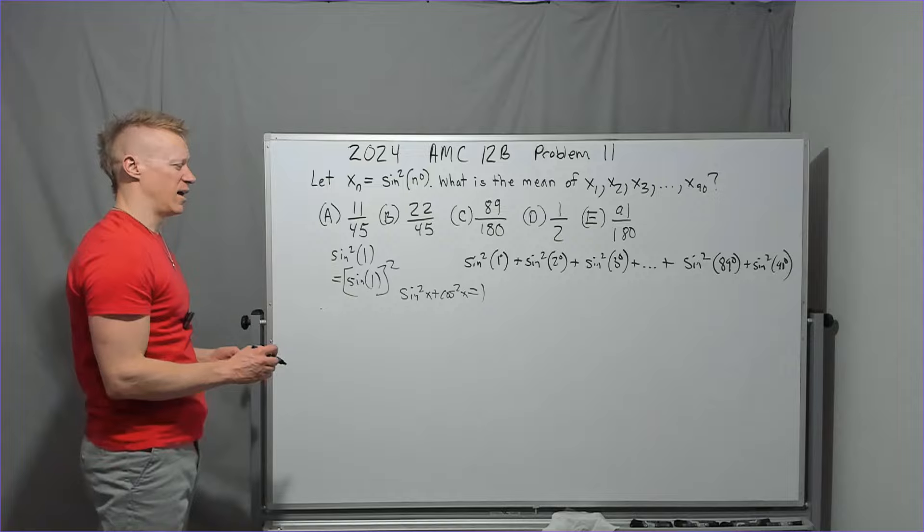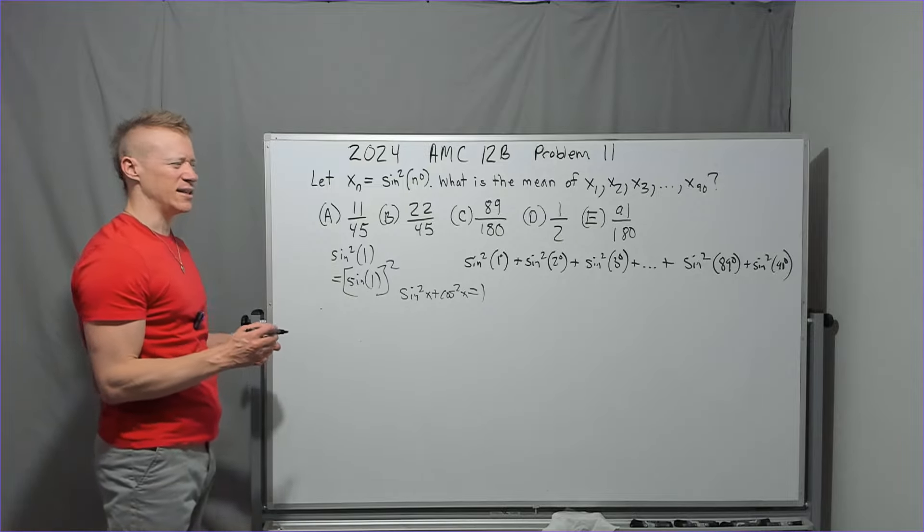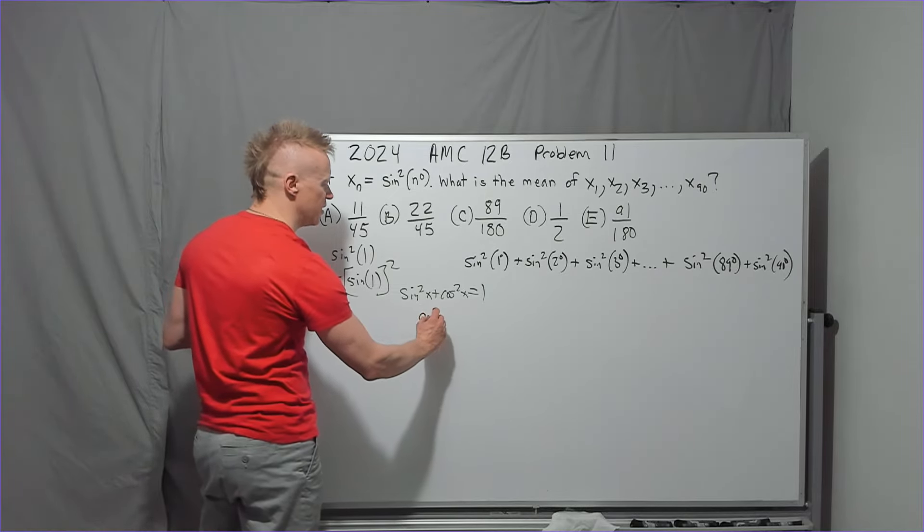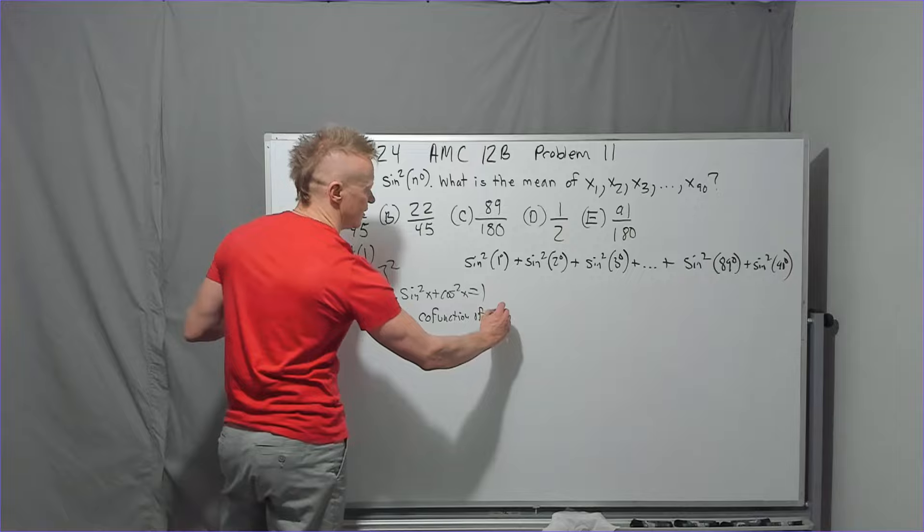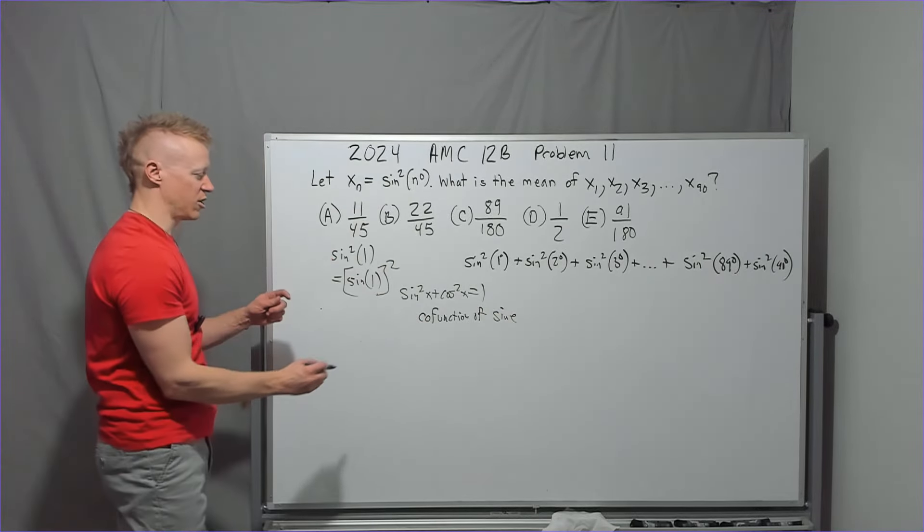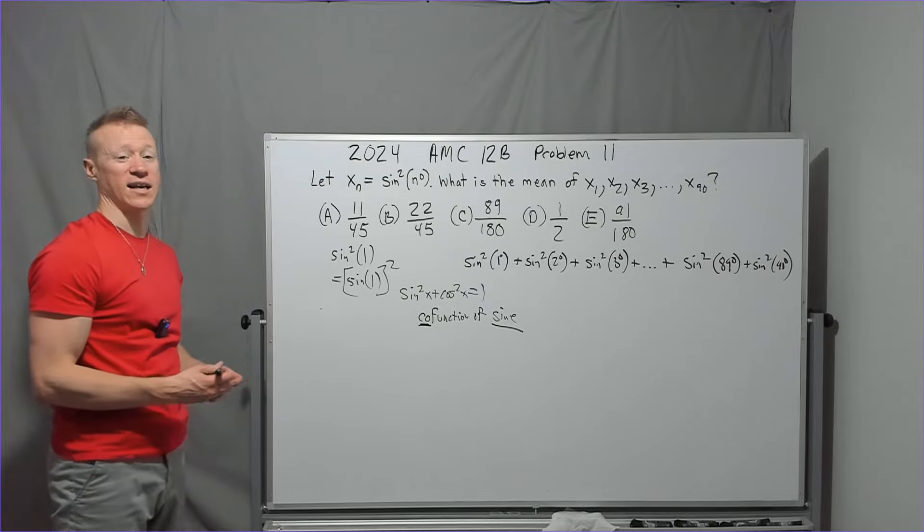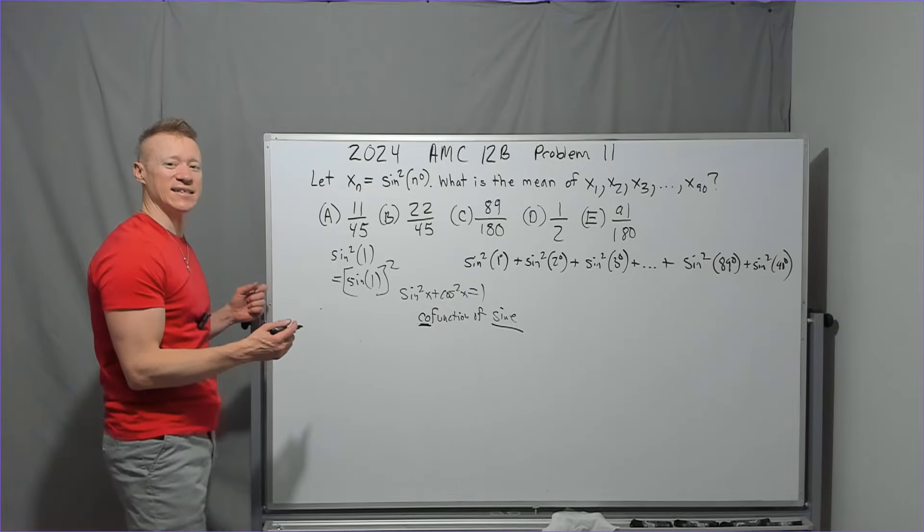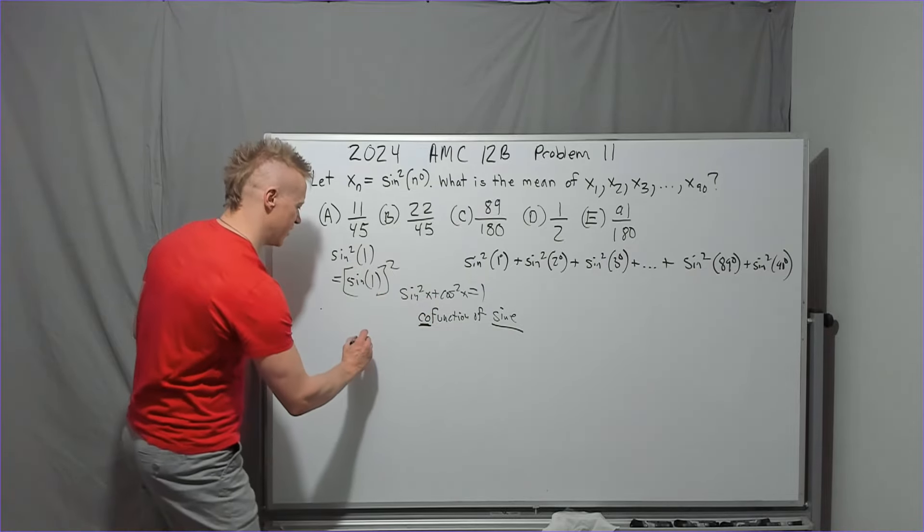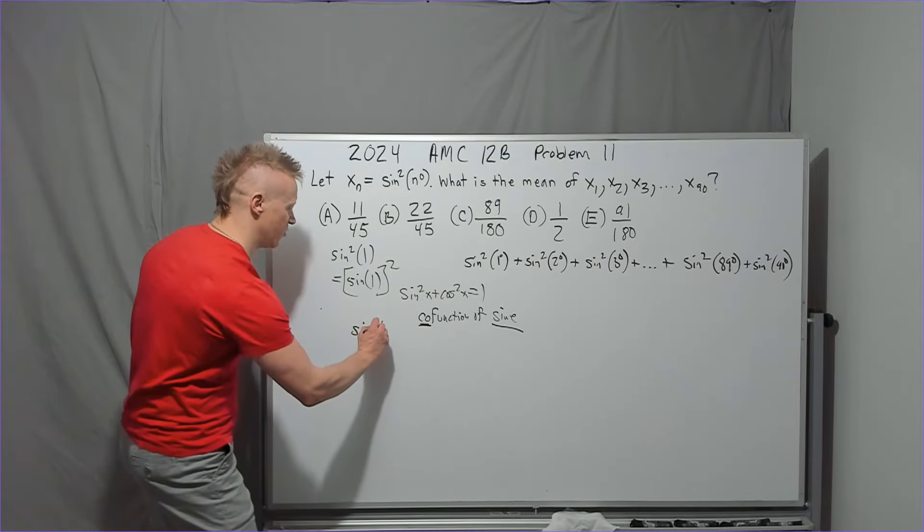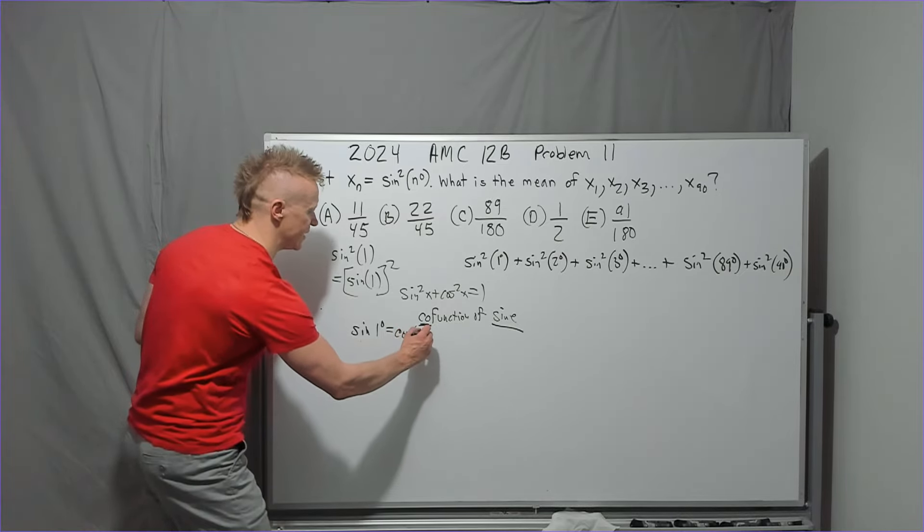Oh, what does cosine stand for? Do you know? It stands for the co-function of sine. That's what cosine is. Co-sine. The co-function of sine. And what that means is that the angles, when they add to 90, they'll be equal. So, for instance, sine of 1 degree is equal to the cosine of 89 degrees.